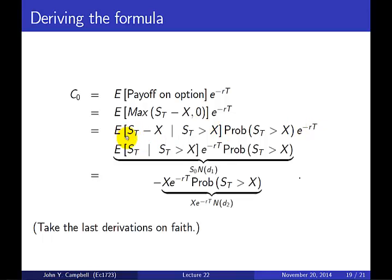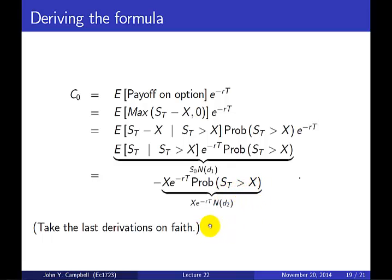The final step is to break the expectation into two pieces: the expectation of ST and the expectation of X (which is just X). The first piece — the expectation of ST given ST is greater than X, times e to the minus RT, times the probability ST is greater than X — corresponds to the S times N(D1) term. The second piece is minus X times e to the minus RT times N(D2). So N(D2) is the pseudo or risk-neutral probability that ST is greater than X — that the option expires in the money.